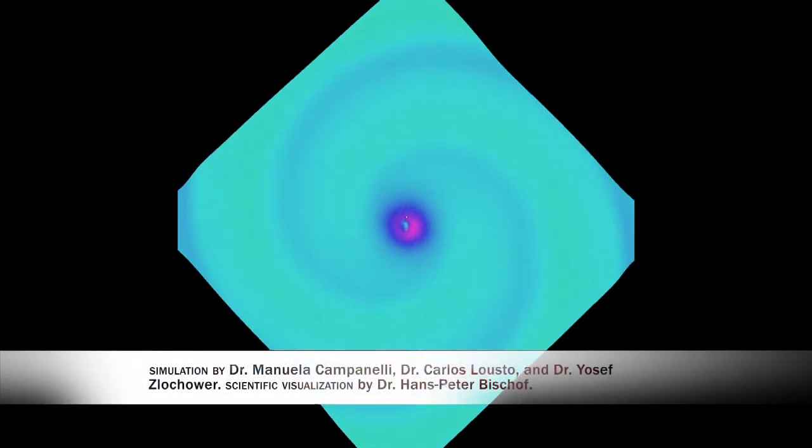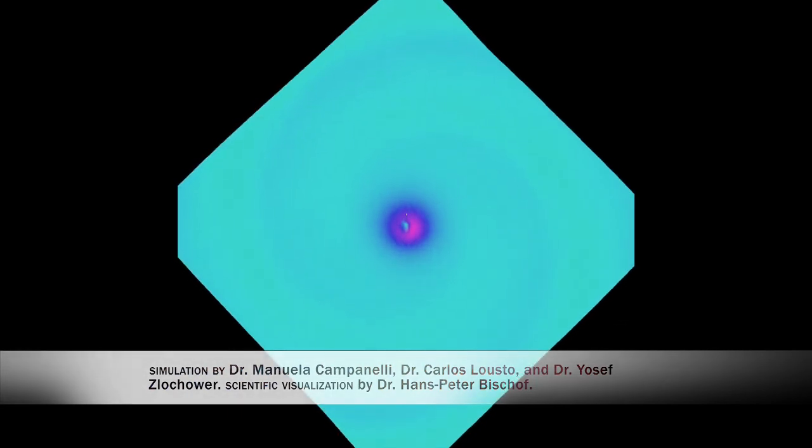The intense spiral bursts subside, leaving behind a single spinning black hole that no longer produces radiation.